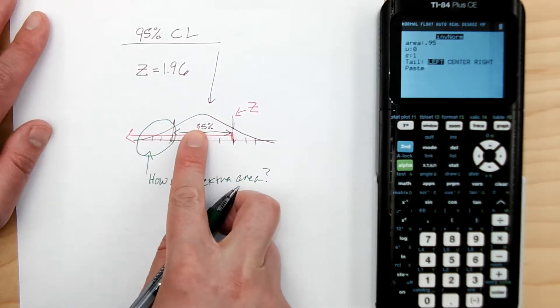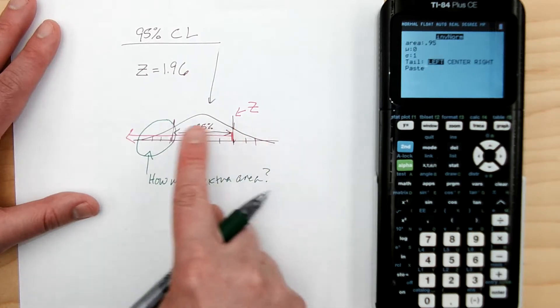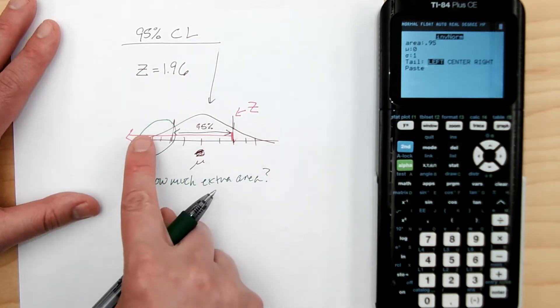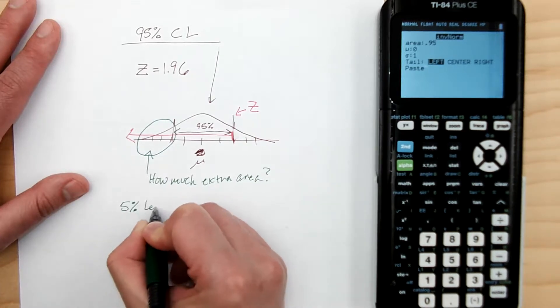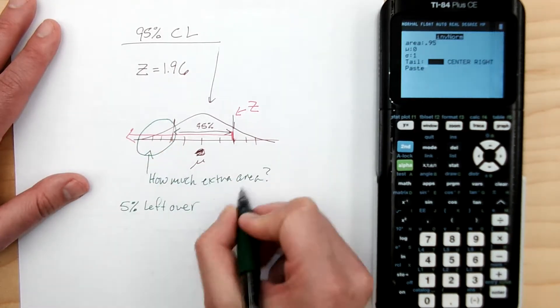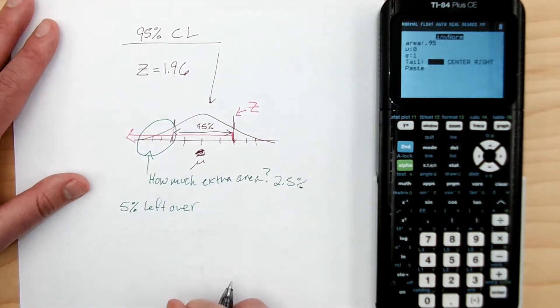Well, if this is 95% in the middle, then that means I have 5% left over. And since that needs to be equally distributed between the two tails, that means that there's 2.5% for each tail.